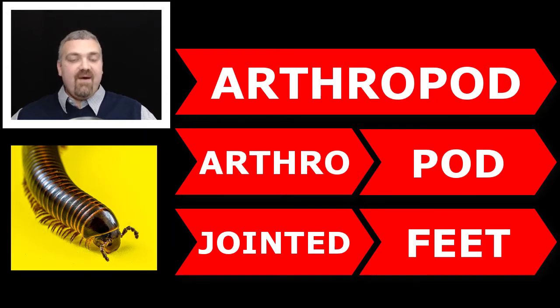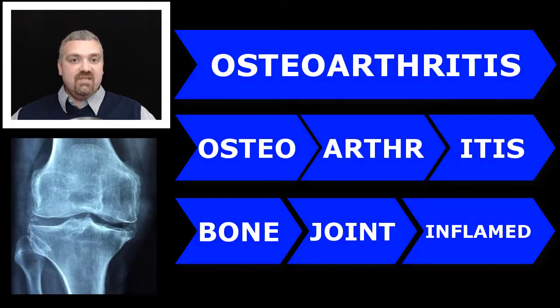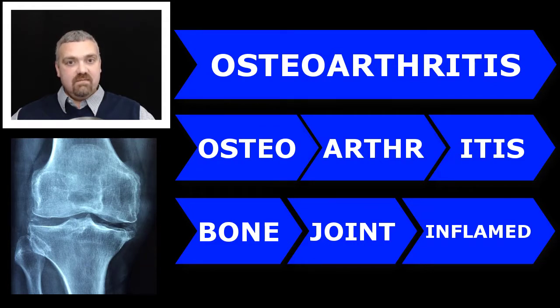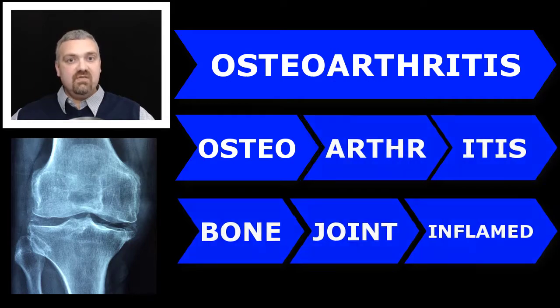For actual clinical examples, think osteoarthritis. Osteo means bone, arth means joint, itis means inflammation. So osteoarthritis is inflammation of the bone and joint.